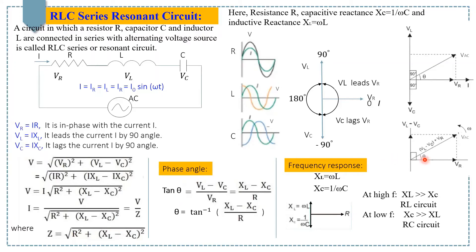We can also derive the phase angle using tan theta, where tan theta equals (VL minus VC) over VR. Substituting the values, we get theta equals tan inverse of (XL minus XC) over R.